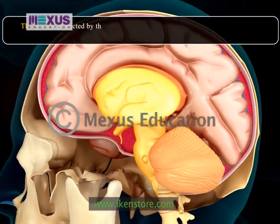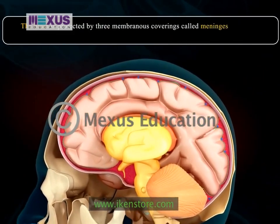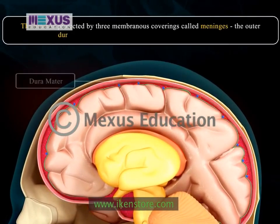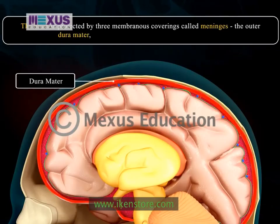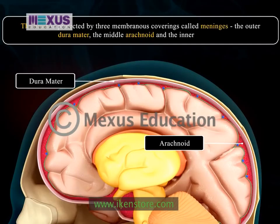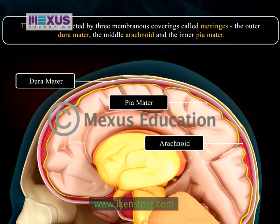The brain is protected by three membranous coverings called meninges, which also continue on the spinal cord. The outermost layer is called the duramater, which is a tough and fibrous membrane. The middle layer is the arachnoid layer, which is thin, delicate, and gives a web-like cushion. The innermost layer is highly vascular, richly supplied with blood, and is called the piamater. Inflammation of the meninges causes a disorder called meningitis.